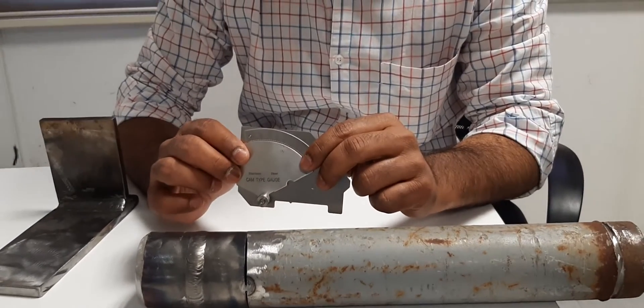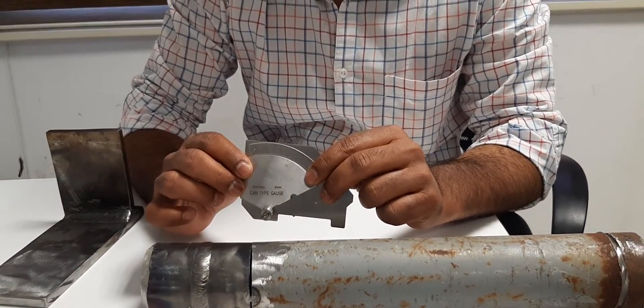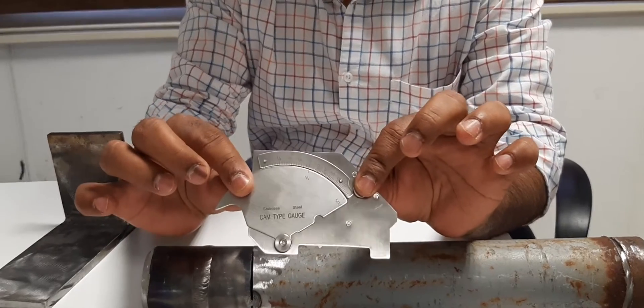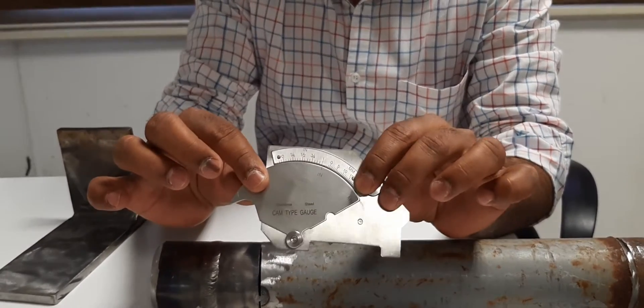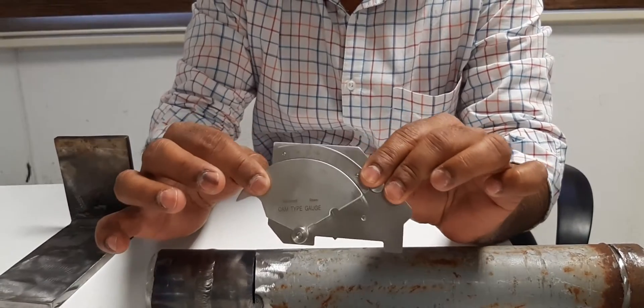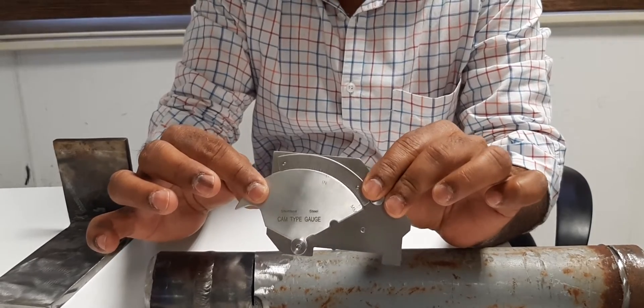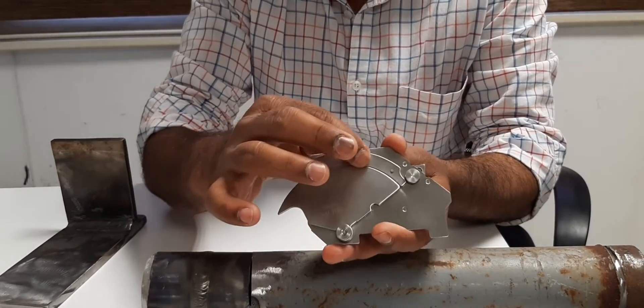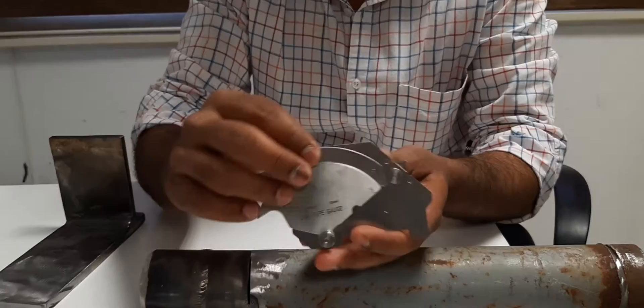Hi friends, today we will discuss how to use the welding gauge. This is the welding gauge. The type of gauge is a Cambridge type. Here one is the fixed scale, this scale is fixed.